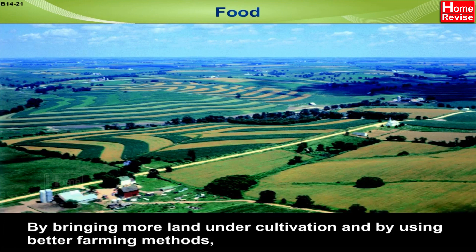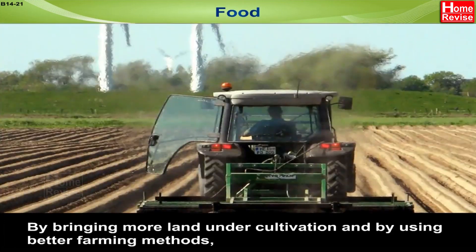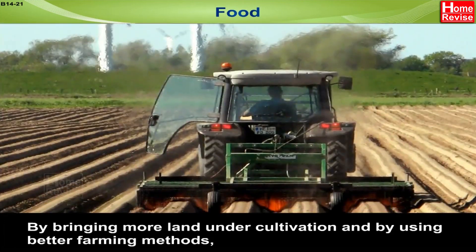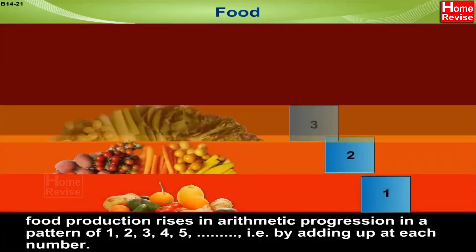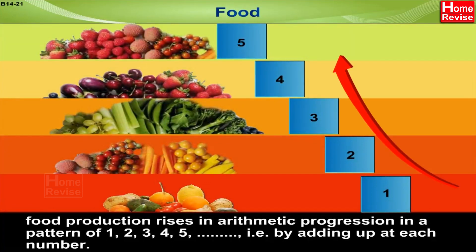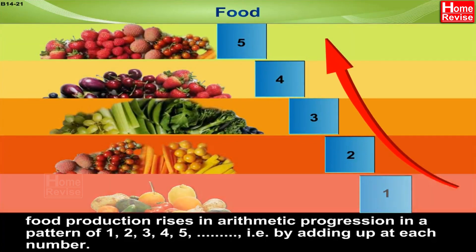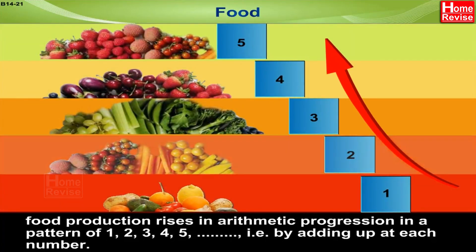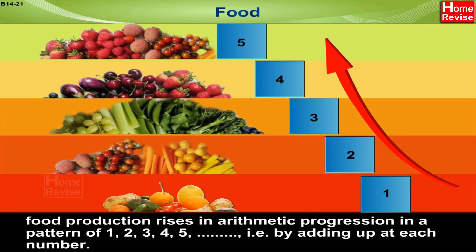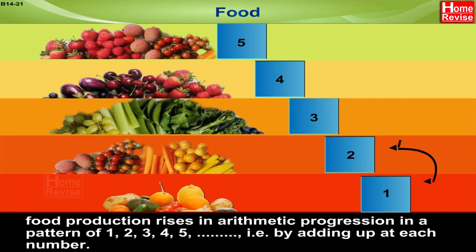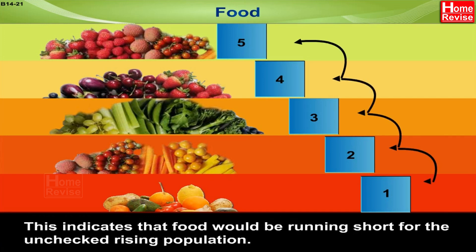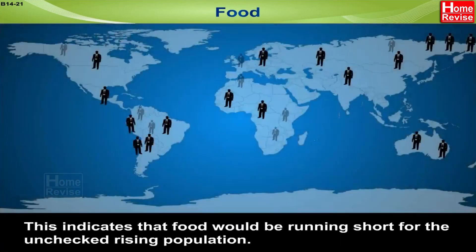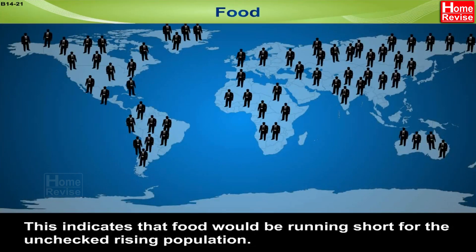Compare this with the growth in food production. By bringing more land under cultivation and using better farming methods, food production rises in arithmetic progression — in a pattern of 1, 2, 3, 4, 5, and so on — that is, by adding up at each step. This indicates that food would be running short for the unchecked rising population.